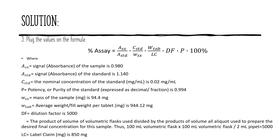Let us now identify the required values and plug them into the formula. The absorbance or signal from the sample is 0.980, while the absorbance from the standard is 1.140. The nominal concentration is previously calculated and equals 0.02 milligrams per ml. The potency in fraction is 0.994 (or 99.4%). The mass of the sample is 94.4 milligrams and the average weight per tablet is 944.12 milligrams. The dilution factor is obtained by getting the product of volumes in which the sample is diluted, divided by the products of aliquot volumes used to prepare the final solution.